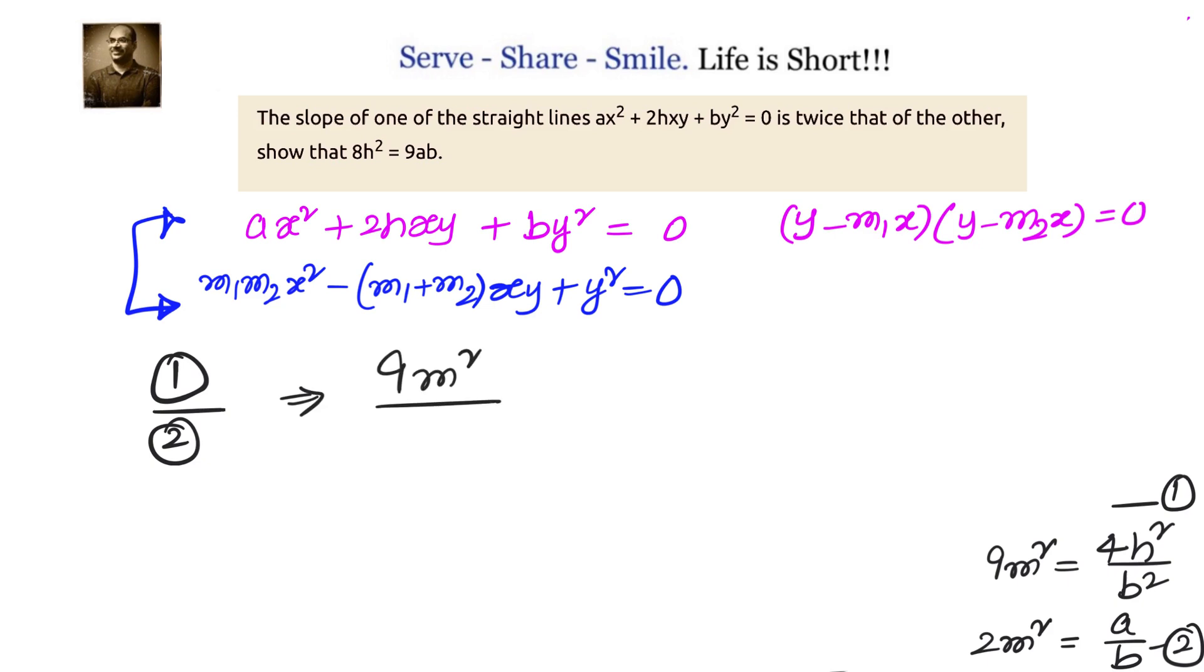We will get 9M²/2M² = (4H²/B²)/(A/B). That gives us 9/2 = 4H²/B² × B/A. Simplify that and cross multiply. We can cancel B, and we get 8H² = 9AB.